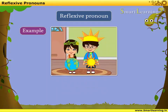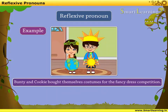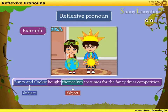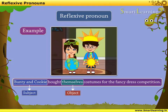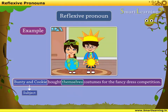The next example is: Bunty and Cookie bought themselves costumes for the fancy dress competition. Here, observe that the object is 'themselves' and the subject is 'Bunty and Cookie.' Both object and subject refer to the same people, i.e. Bunty and Cookie. Hence, 'themselves' is a reflexive pronoun.